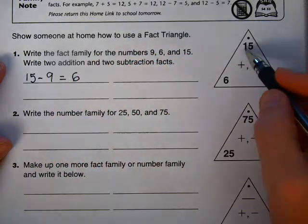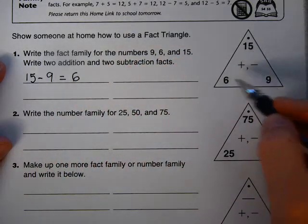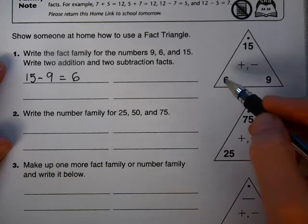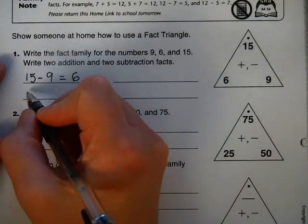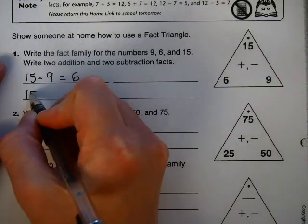Okay, so see how I used all three numbers, and I made them work nicely together. 15 minus 9 equals 6. Then I'm going to do the same, the big number again.